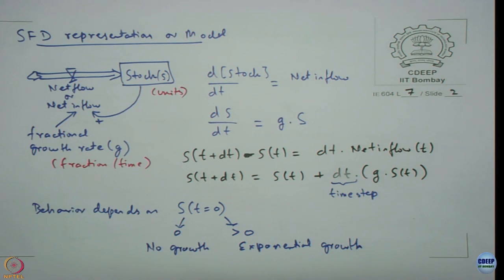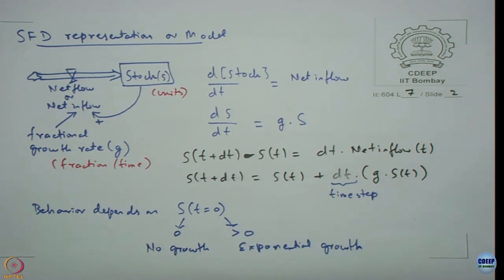The two possible behaviors are there. If we assume G is greater than 0, as long as G is strictly positive, we are going to get exponential growth. Stock has to be non-zero for this to kick start, else the system will exhibit no growth.